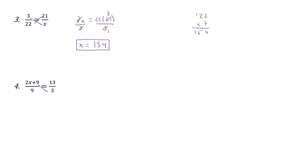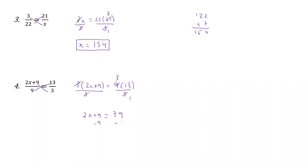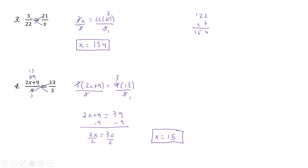Now the more complex example. Cross product gives us 3 times (2x + 9) equals 9 times 13. Rather than multiplying out large numbers, I'll first divide both sides by 3: that cancels, 3 goes into 9 three times, giving 2x + 9 equals 3 times 13, which is 39. Subtracting 9 gives 2x equals 30, then dividing by 2 gives x equals 15. Checking: 2 times 15 is 30, plus 9 is 39, and 39 divided by 3 is 13 — correct.